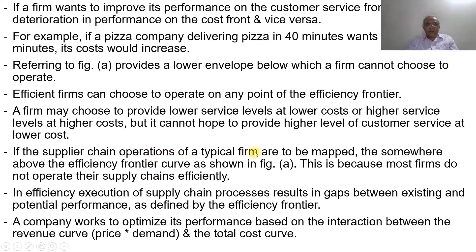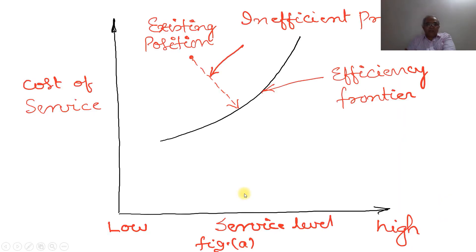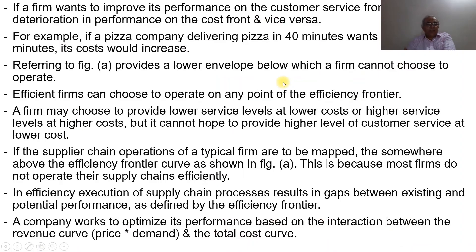A firm cannot mix higher customer service with the lowest cost. If the supply chain of a typical firm were mapped, it would appear somewhere above the efficiency frontier curve, because most firms do not operate their supply chains efficiently — these inefficient positions lie above the efficient frontier.